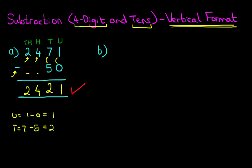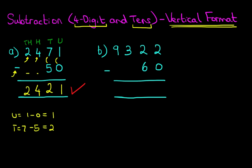Let's move on to our second example. We have 9,322 minus 60. I'm going to label the columns: units, tens, hundreds, and thousands. We are now ready to do the subtraction — check the sign. We start, as always, on the right-hand side. The units column: we've got 2 minus 0, the answer is 2.